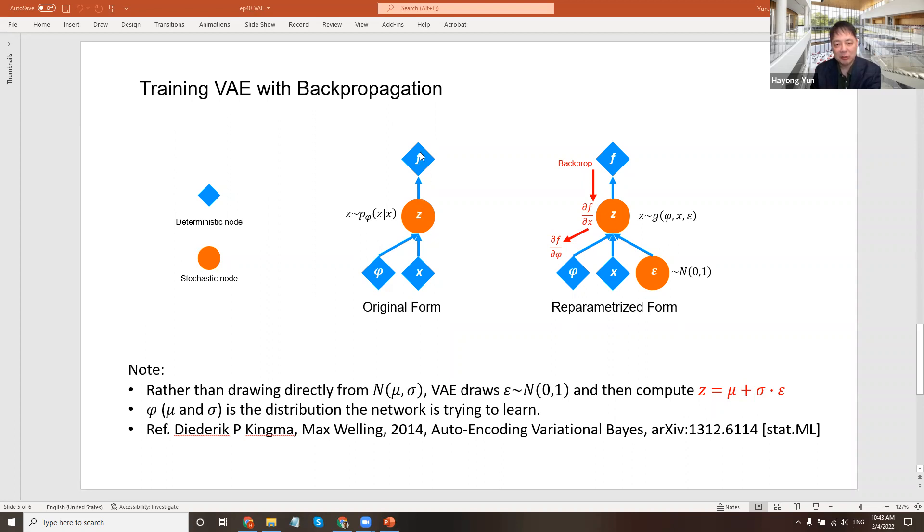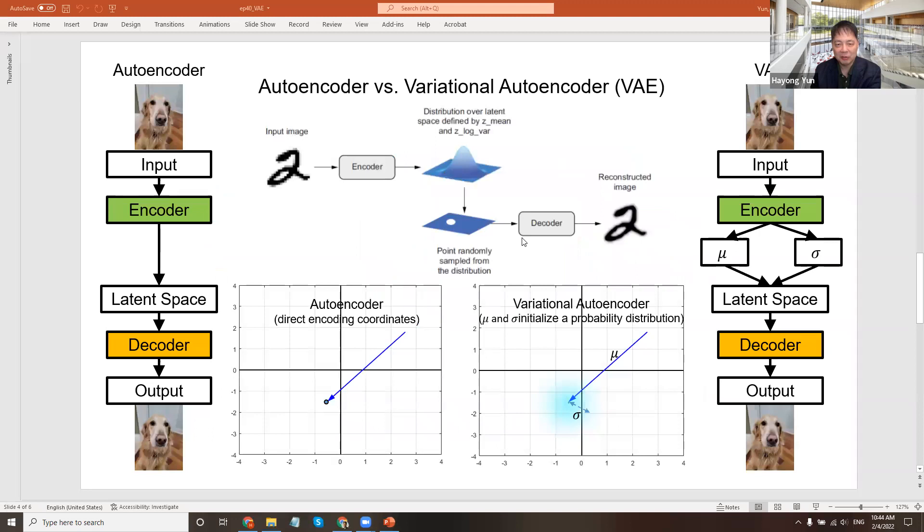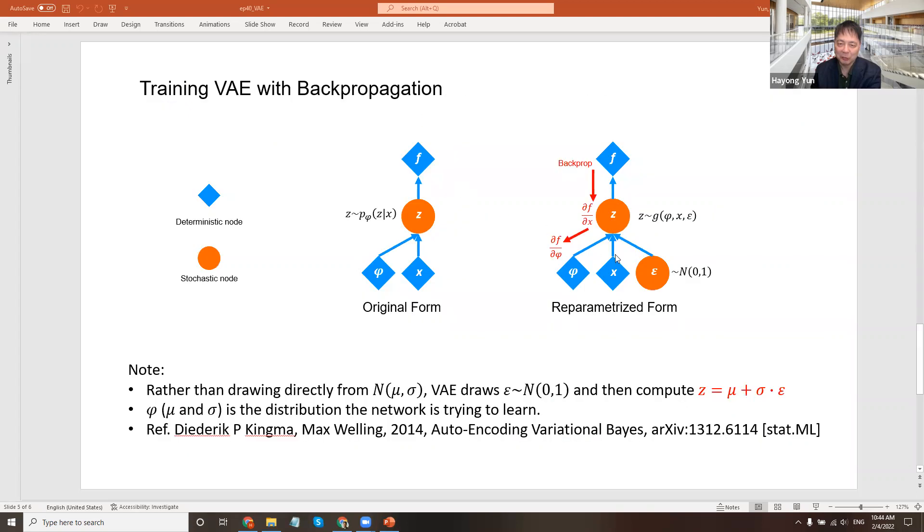This is actually difficult to backpropagate because you cannot really backpropagate from a point that it drew back to a distribution. So what people do is the trick - have a random normal distribution. We know how it looks like and we don't need to really model it. We know how a standard normal distribution looks like.